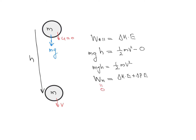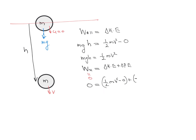We write: 0 = (½mv² − 0) + ΔPE. Taking the final position as the reference line, the final potential energy is −mgh and initial potential energy is 0. So: 0 = ½mv² − mgh, which again gives mgh = ½mv².